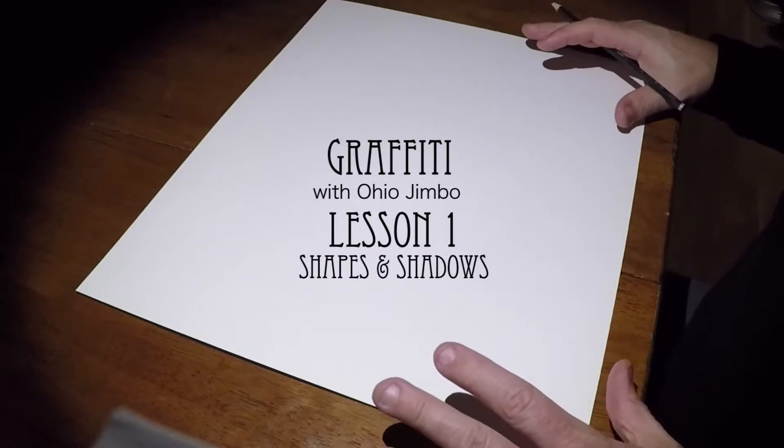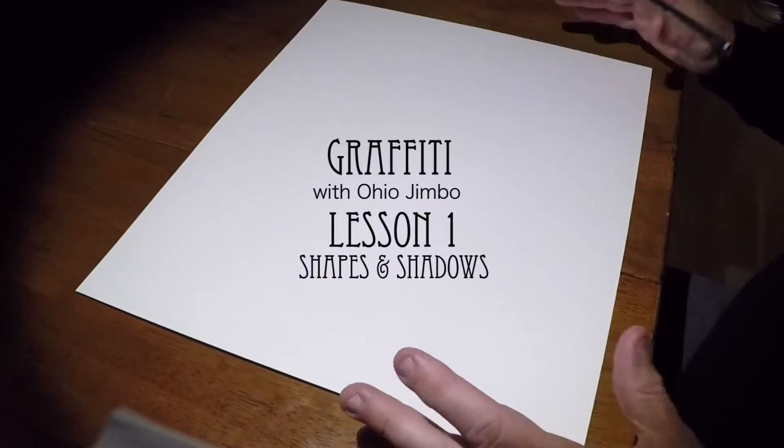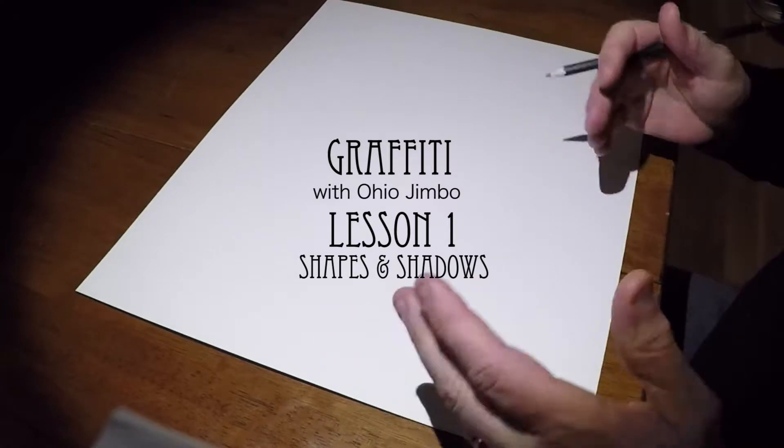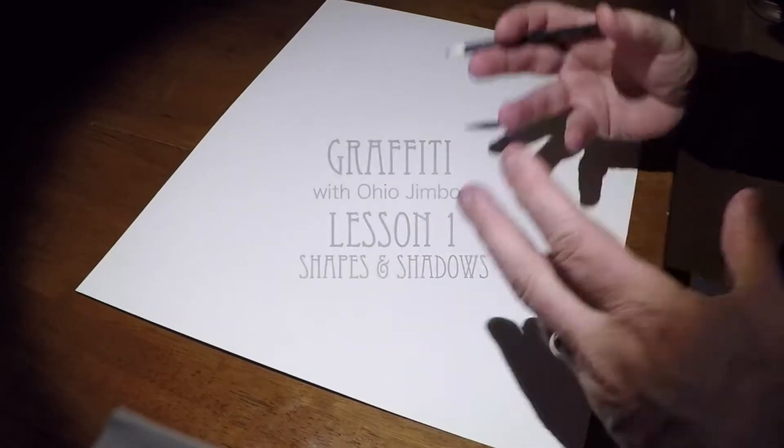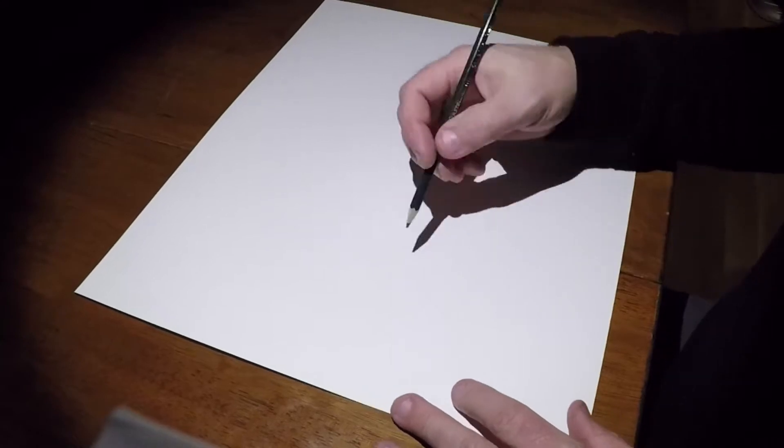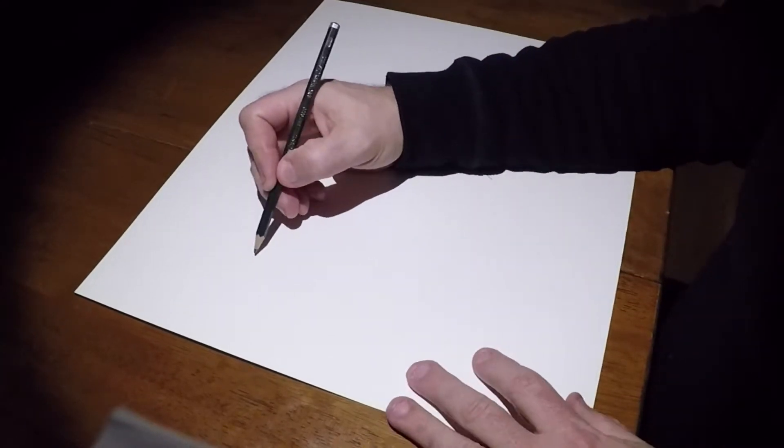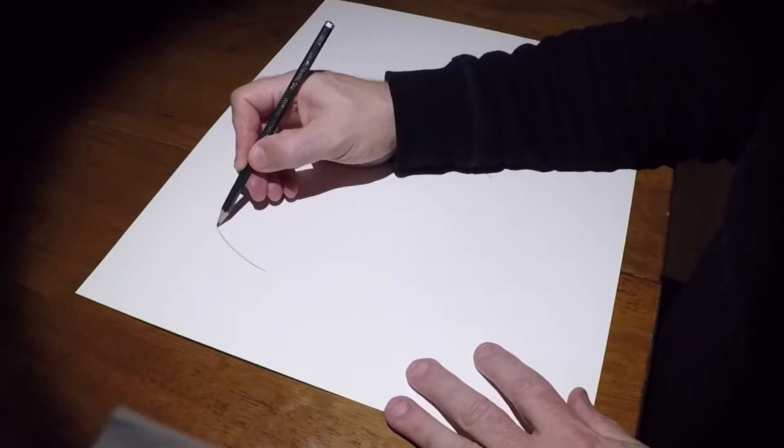All right, we're gonna talk a little bit about graffiti and letters. They're all pretty simple, but the thing about graffiti is you got to show depth and dimension. So we're just gonna do a couple of letters here. For instance, if we were going to do an A, I'm gonna sketch out an A here.